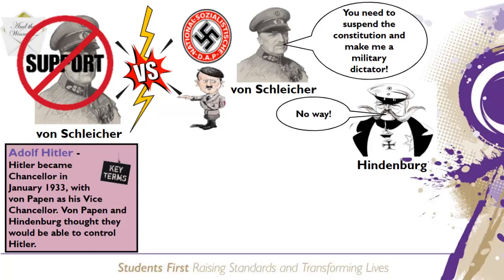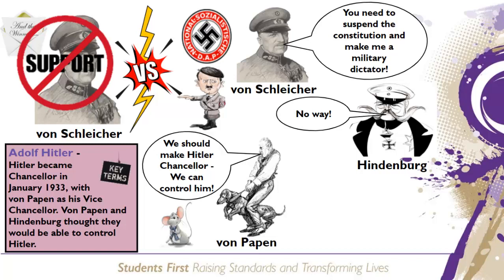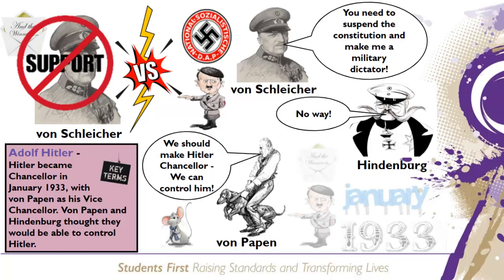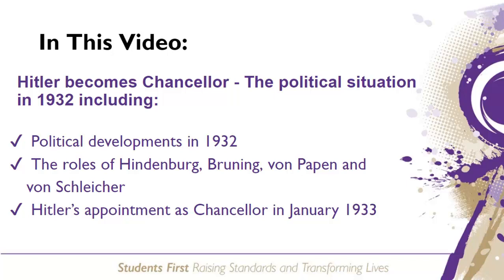Von Papen warned Hindenburg of the threat of a military coup and suggested they make Hitler chancellor and himself vice-chancellor. Von Papen believed that Hindenburg and himself could make all the decisions and use Hitler as merely a figurehead of government. Von Papen said that within two months, "we will have pushed Hitler so far into the corner that he'll squeak like a mouse." The ageing president finally agreed, and Hitler was legally appointed as Chancellor of Germany on the 30th of January 1933.